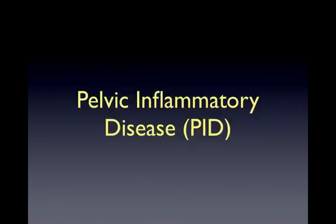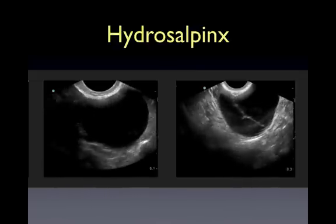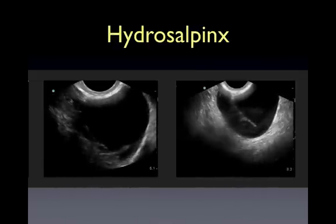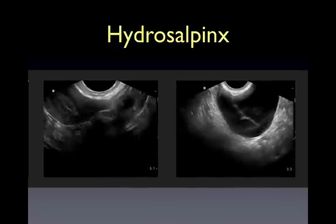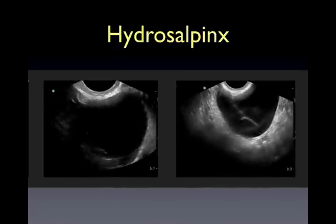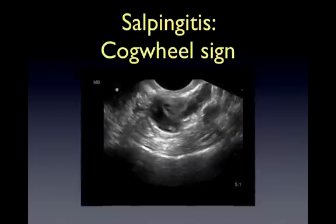Pelvic inflammatory disease is caused by the entrapment of sexually transmitted bacteria in the fallopian tube, creating a hydro- or pyosalpinx. On ultrasound, this is seen as a fluid-filled tube with occasional hyperechoic linear structures representing the thickened endosalpingeal folds. A cross-section of the thick-walled tube appears as a sonolucent wheel-shaped structure. We call this the cogwheel sign.